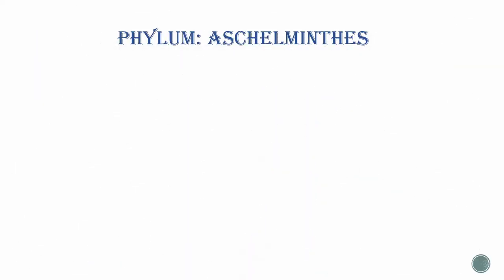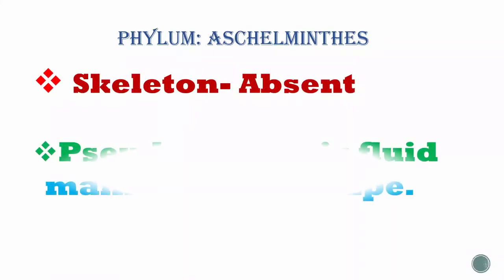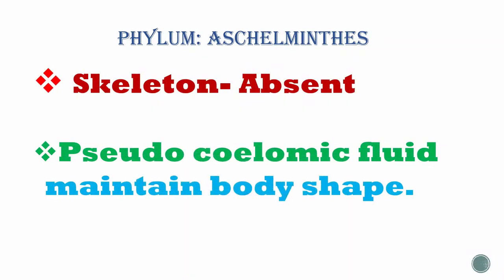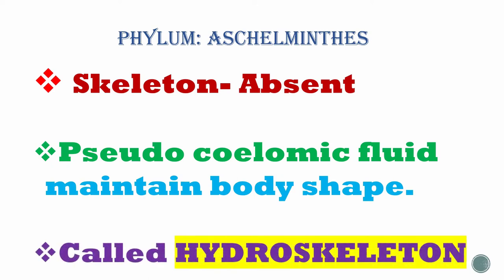The skeletal system: skeleton is absent in roundworms. Pseudocoelomic fluid maintains the body shape instead of a skeleton. This type of character is termed a hydroskeleton.